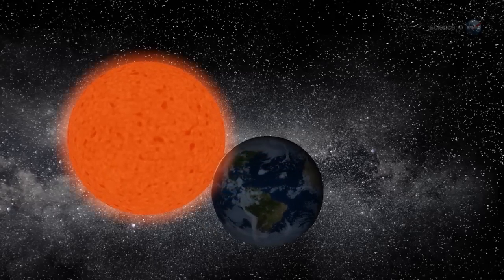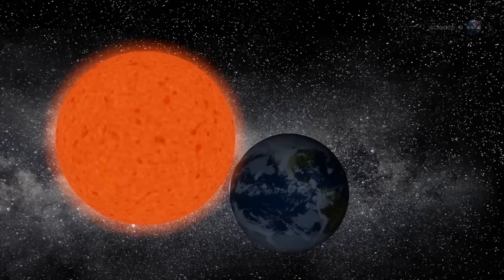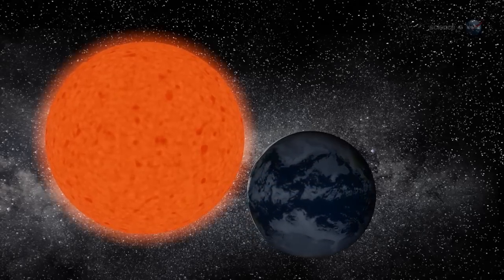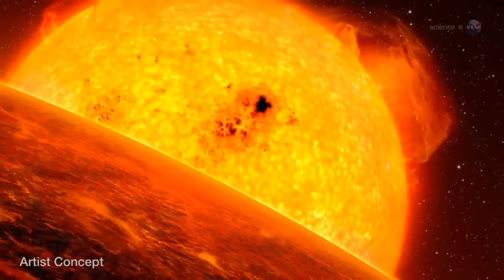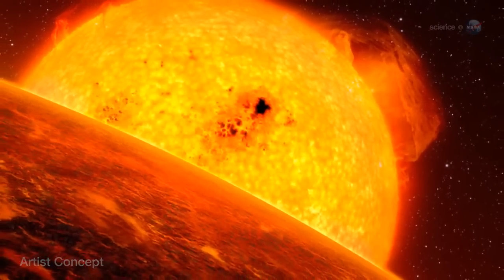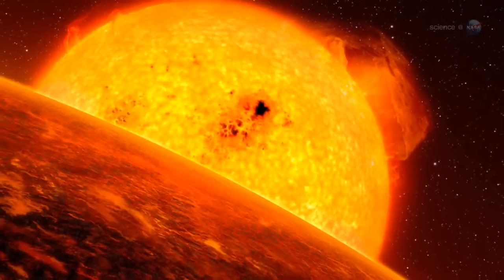On the other hand, the Sun might expand so quickly that our planet has no chance to escape. Earth would get caught in the Sun's rapidly advancing atmosphere and spiral inward to oblivion.